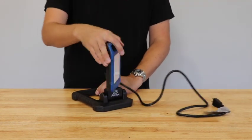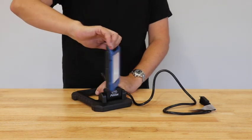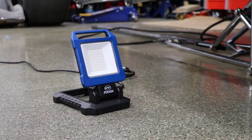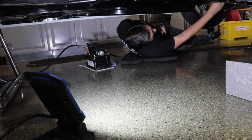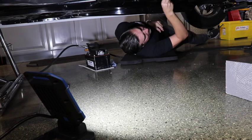The LED WorkLite has a pivoting handle plus 360-degree rotation to make sure you get light exactly where you need it, whether it's under the hood, under the car, or around the garage.